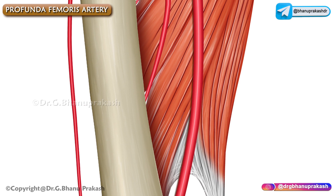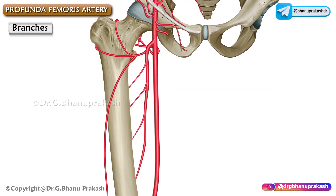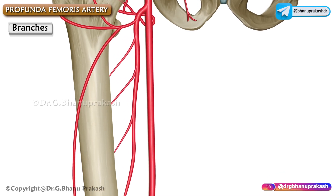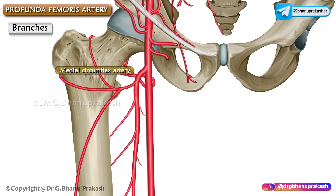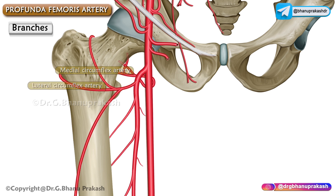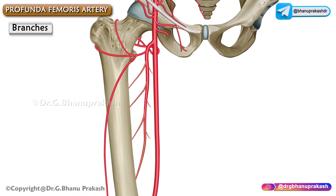The branches of the profunda femoris artery are as follows: muscular branches, the medial circumflex femoral artery, the lateral circumflex femoral artery, and four perforating arteries.